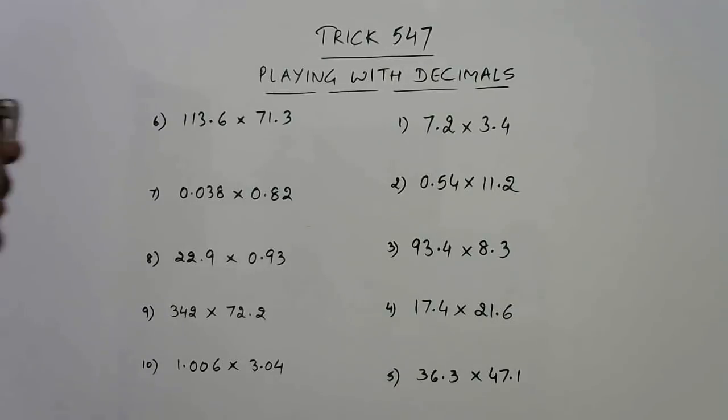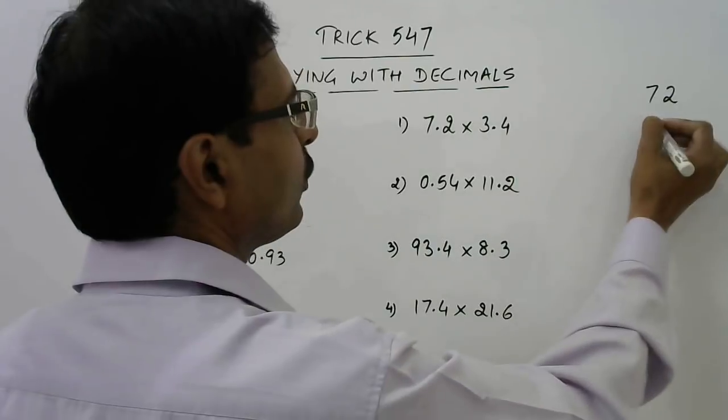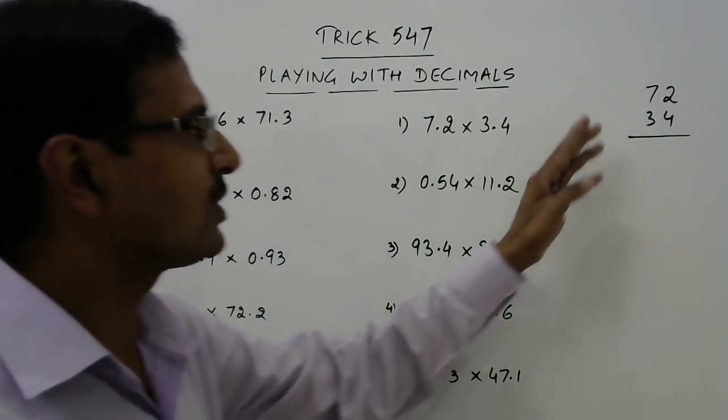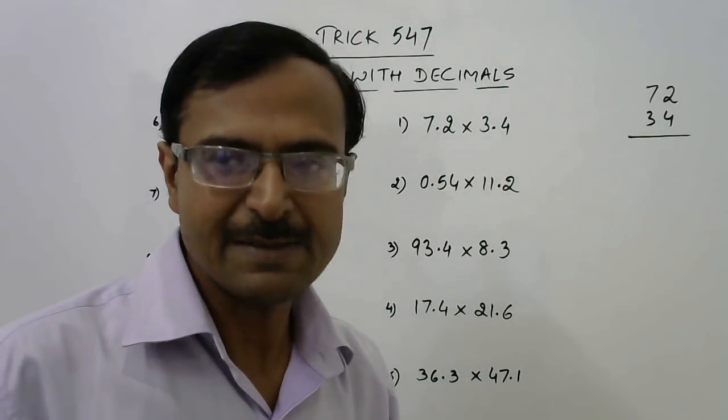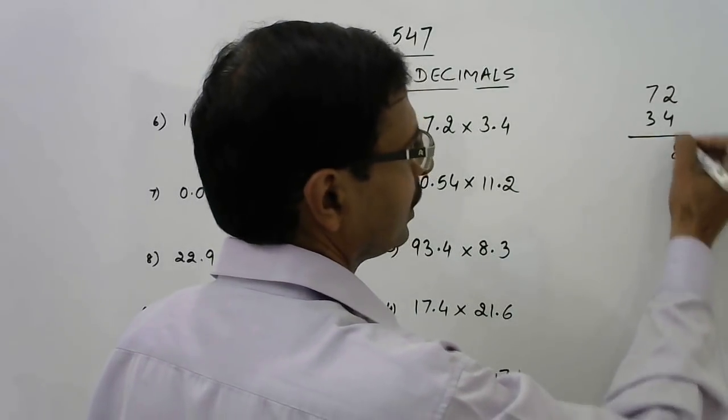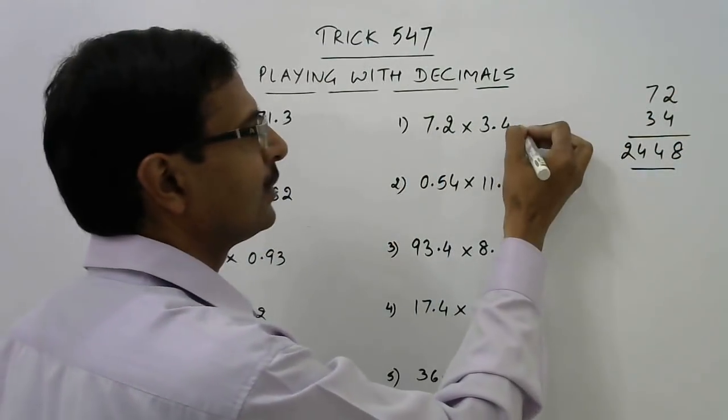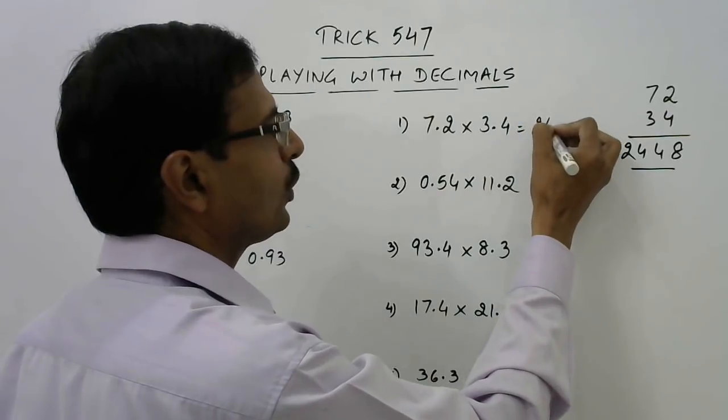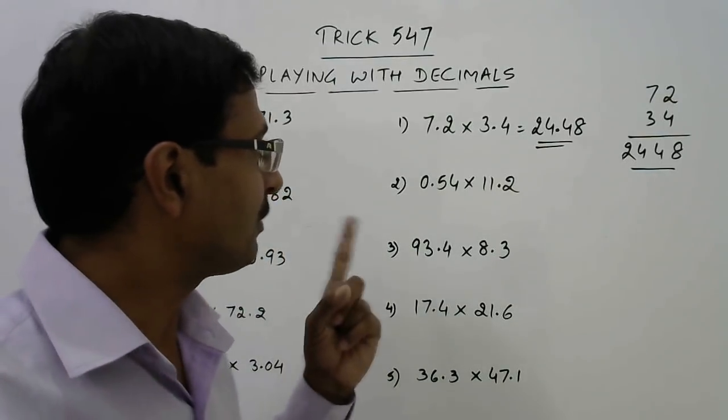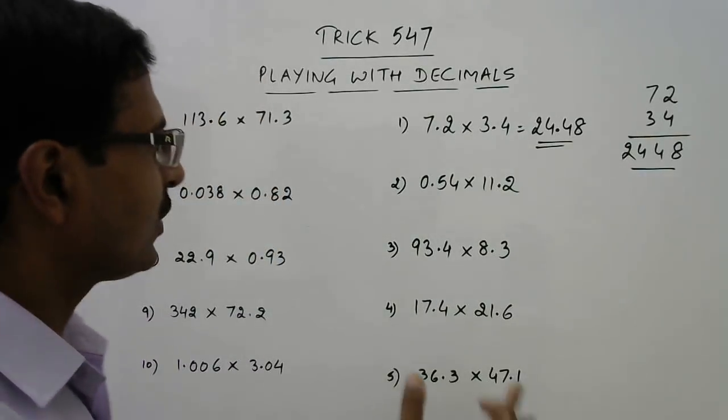Let's see the first one: 7.2 and 3.4. So I am just writing the numbers irrespective of the decimal first. I will carry out this calculation on board and then finally I will put the decimal in the answer. The result is 2448, so 24.48 is the answer. Now see the amount of time which I have taken to multiply this 7.2 into 3.4. Likewise we can go on and on.